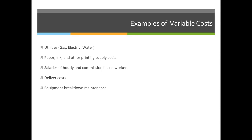Let's say customer A picks a really expensive paper and customer B chooses a really cheap paper. They know they're paying for premium paper, so they're going to have a higher cost for paper. Those costs we don't have to incorporate into our yearly budgets, because if I don't sell any printing jobs, I don't have to buy any paper. And when I do buy paper, the customer is going to directly pay for that.